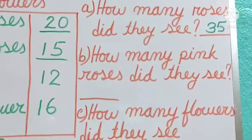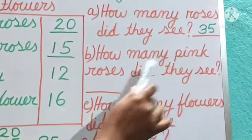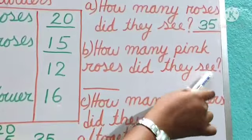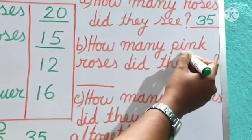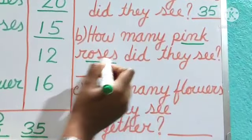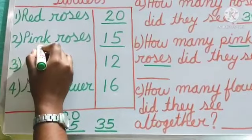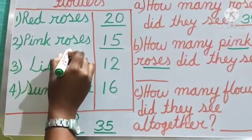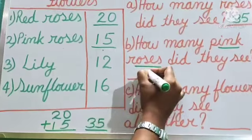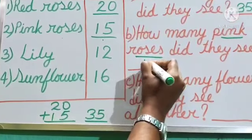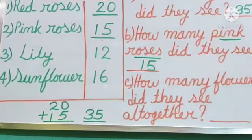Now number B: How many pink roses did they see? This is very easy. We have to see only pink roses. Number 2 gives us information about the pink roses — and how many? 50. So we will write here: answer 50.